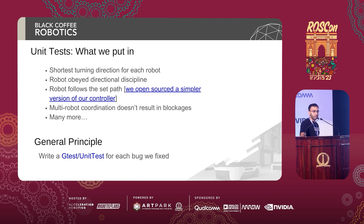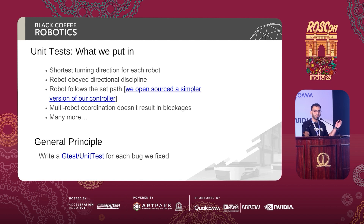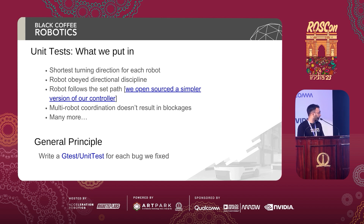A quick question: how many of you have written any sort of test before? Maybe 30–40%. So this is really nothing fancy — you say, this is my expected output, I pass in the parameters and inputs, and I get exactly or ballpark the same result back. gtest and unittest are the popular libraries for C++ and Python respectively, and they are well-supported with ROS. Those are the libraries we used.